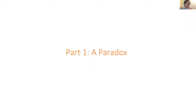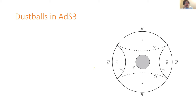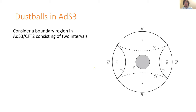Let's dive into the main part of the talk. First, I want to show why the very naive application of the QES prescription gives a paradox. The setup I'm going to consider doesn't have a black hole, because it's simplest to not have to worry about that. It's called a dust ball setup, and it really goes back to a paper by Akers, Leichenauer, and Levine from last summer.